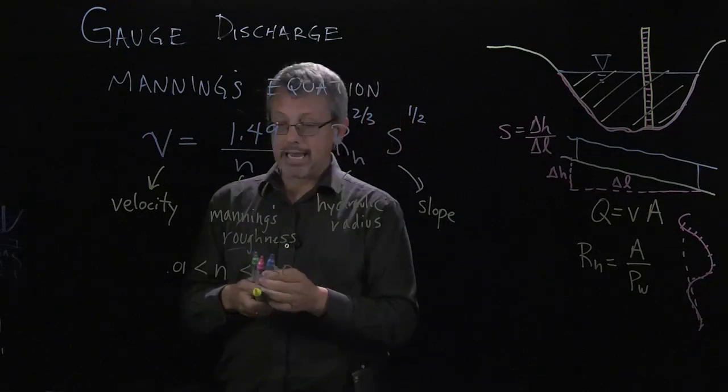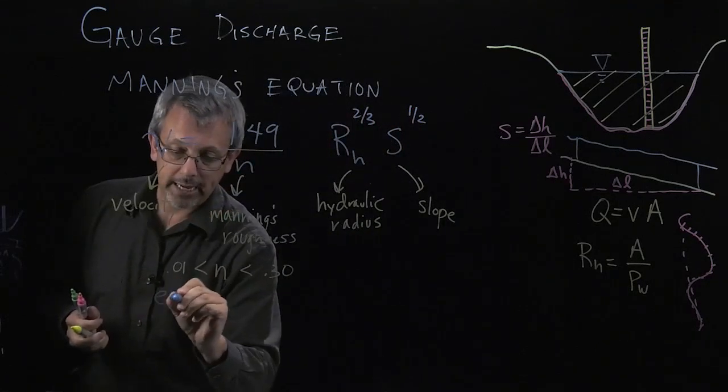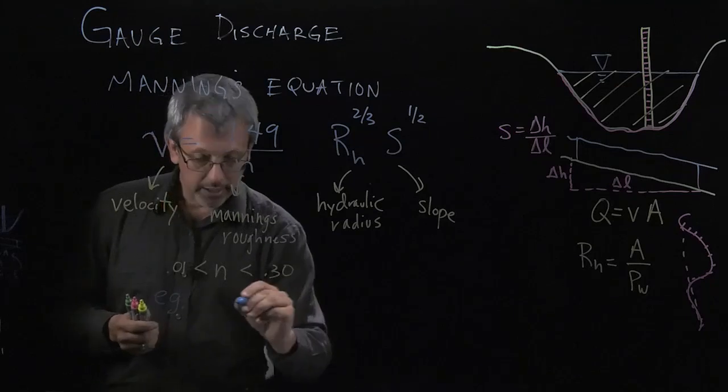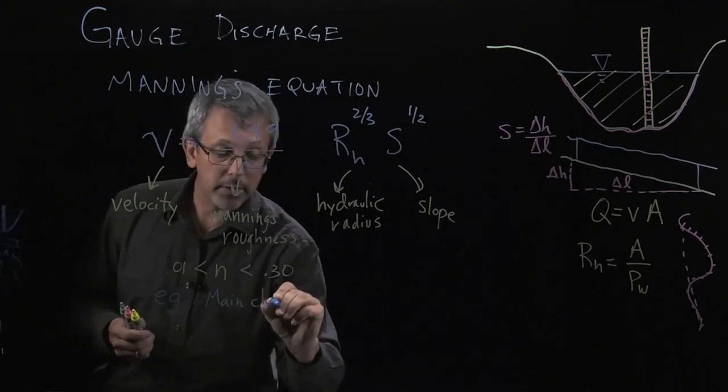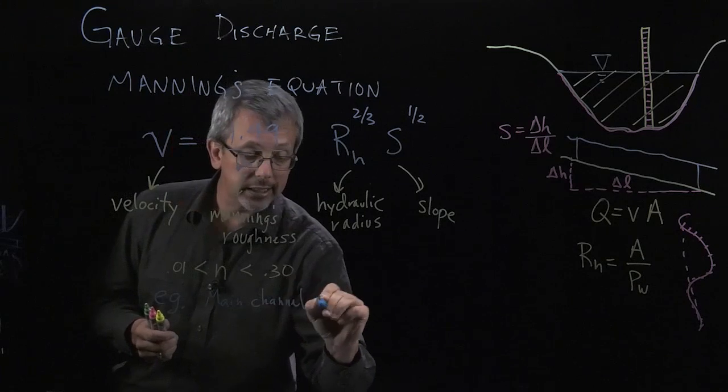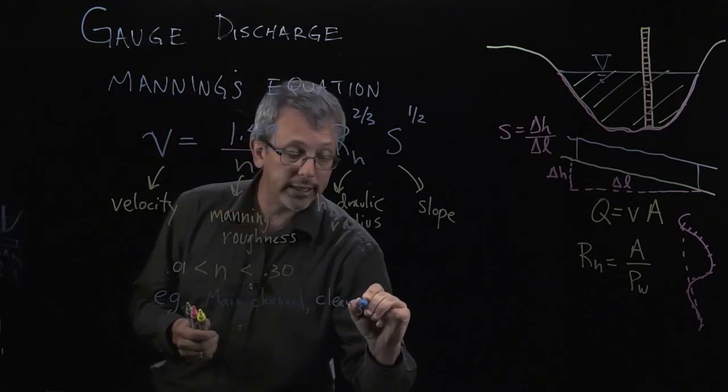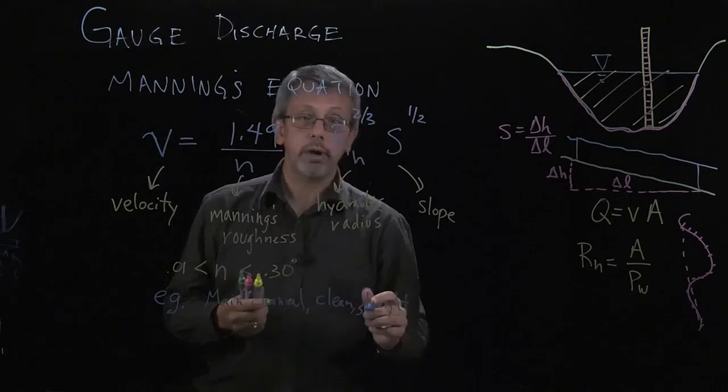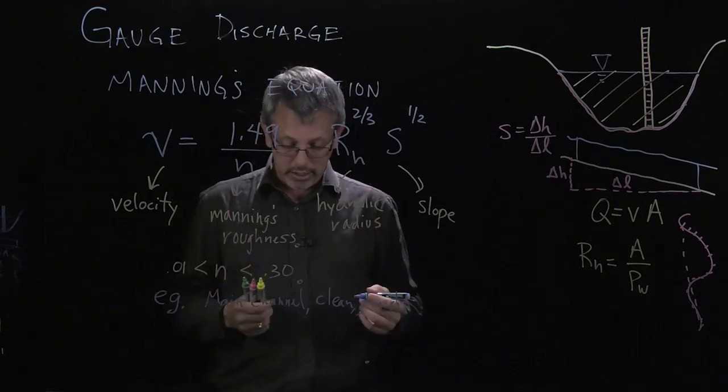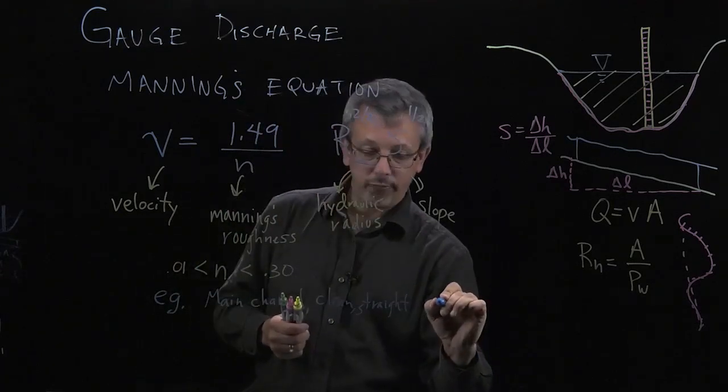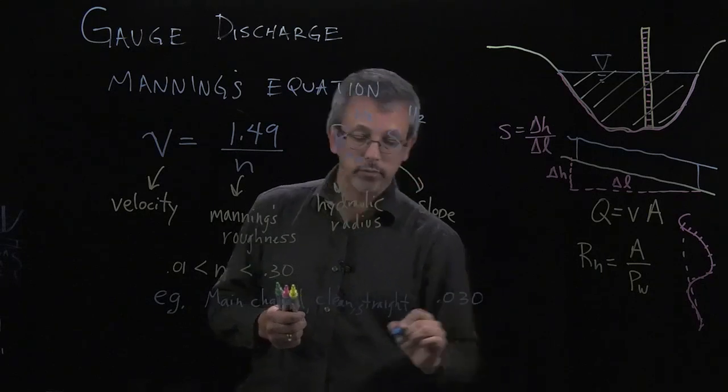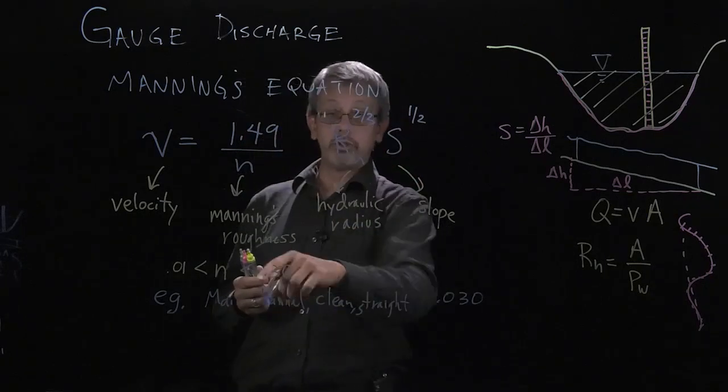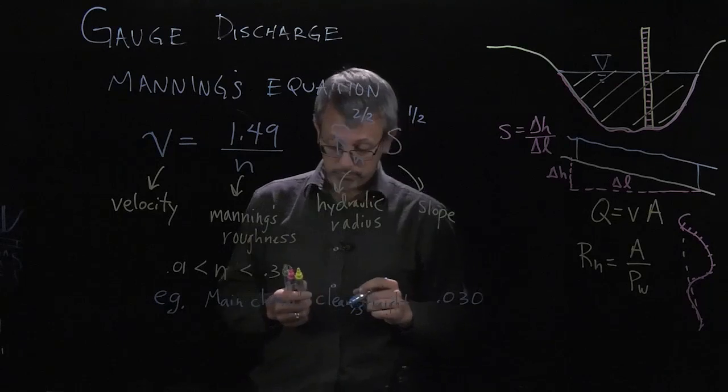So for some examples, if we have the main channel, like it's the main channel of a river and it's clean and straight, those are the type of descriptors that you might use to apply here, you might have a value of 0.030.